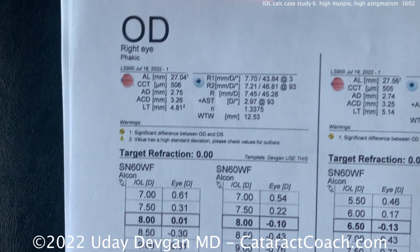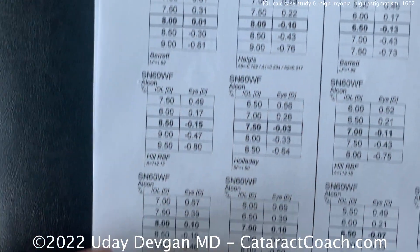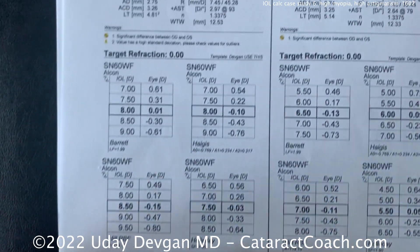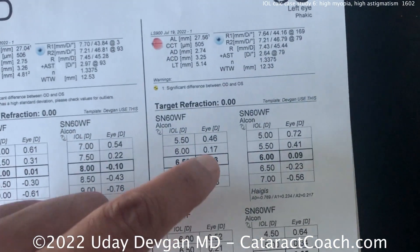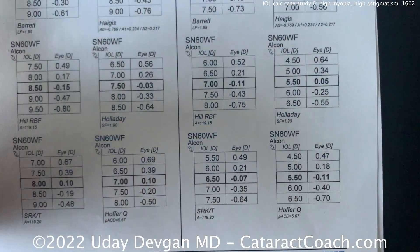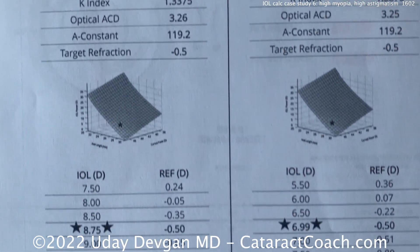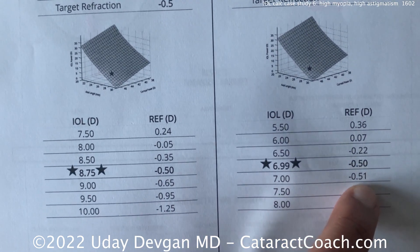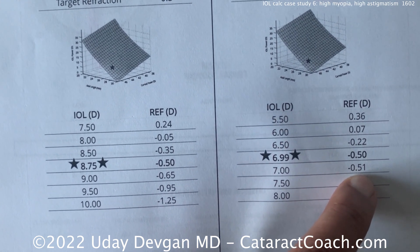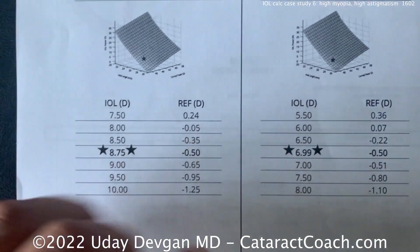Let's look at the calculations. For the right eye, most would say do an 8-diopter lens — Barrett is saying 8 is okay, SRKT is pretty close, Hagis as well. For the left eye, you'd probably say 6.5; Hagis is 6, SRKT 6.5. That's all reasonable — but I don't think so. We're going to do lens calculations with IowaCalc.com, using the super formula. We'll aim a little more myopic — minus a half. So I'm targeting a 7-diopter lens on the left side, and either an 8.5 or 9-diopter on the right side.